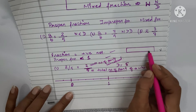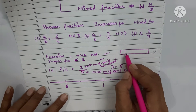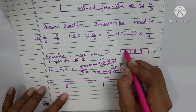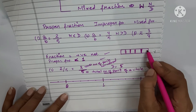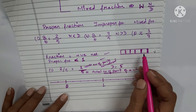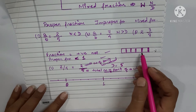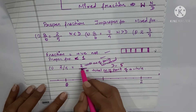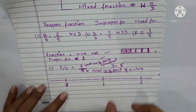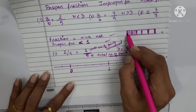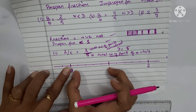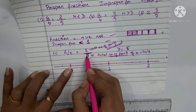So in one whole we have a total of five equal parts — one, two, three, four, five. All parts must be equal; unequal parts are not allowed. If we are saying two out of five, it means two parts are considered out of five. We take one whole unit from zero to one, and divide that unit into five equal parts.